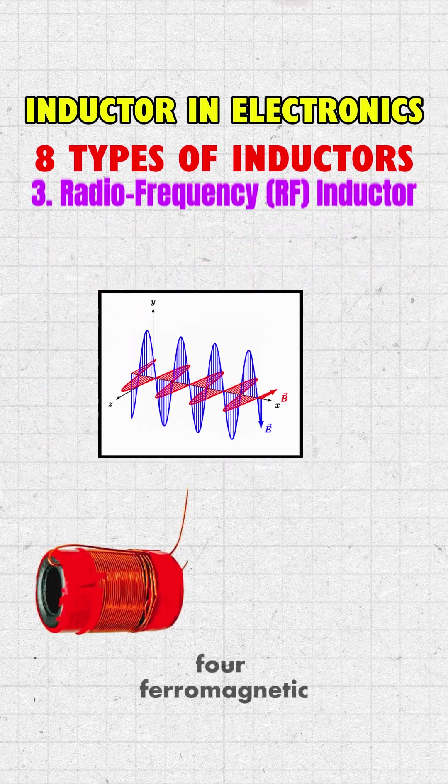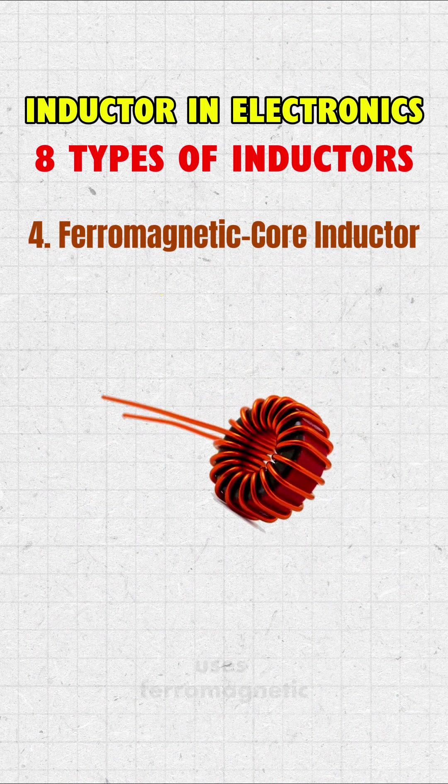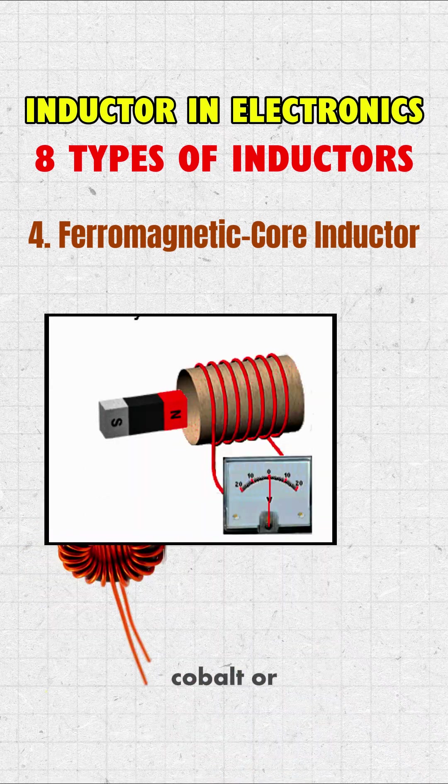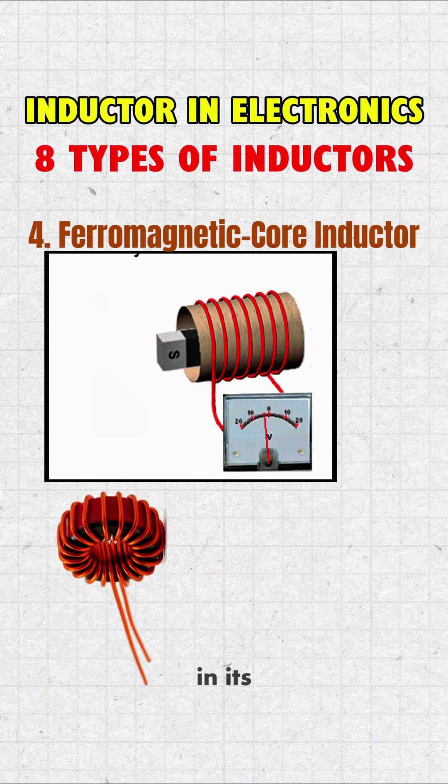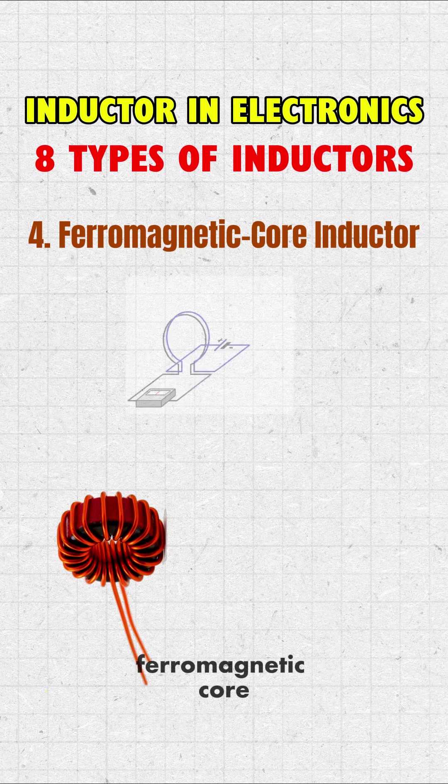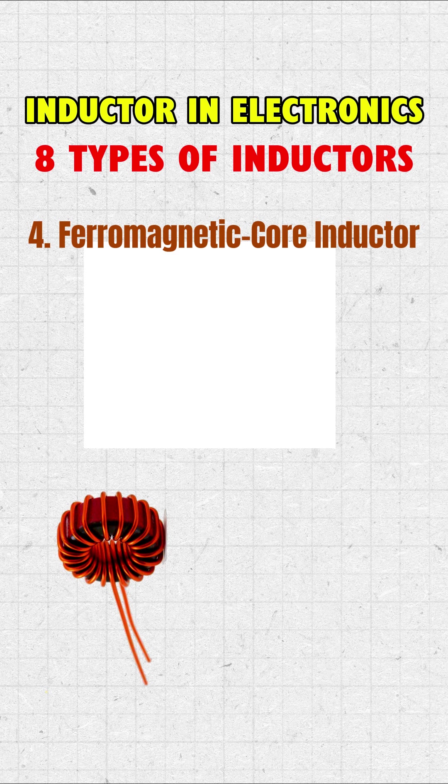4. Ferromagnetic core inductor. This type of inductor uses ferromagnetic materials like nickel, cobalt, or iron alloys in its core. These materials help improve the magnetic field strength, making the inductor more efficient. Ferromagnetic core inductors are used in power transformers and electrical filters.